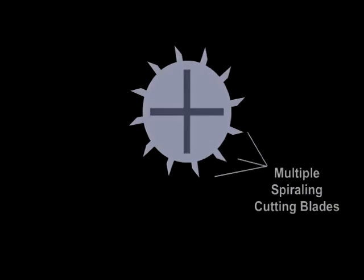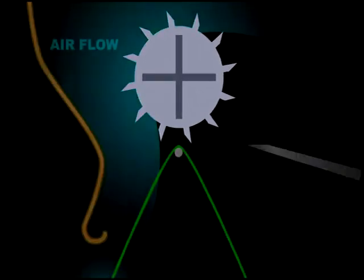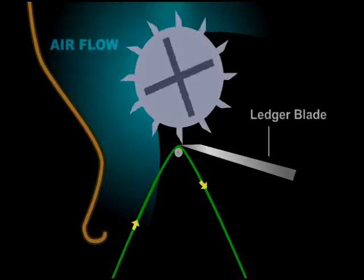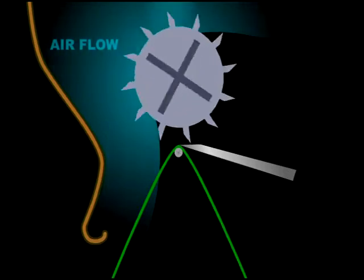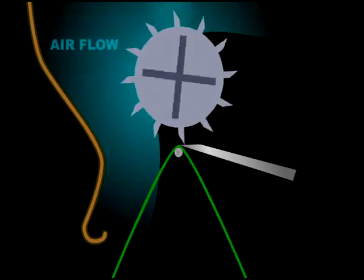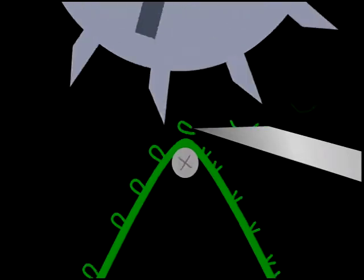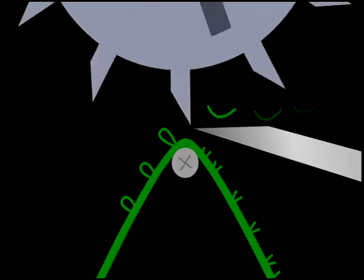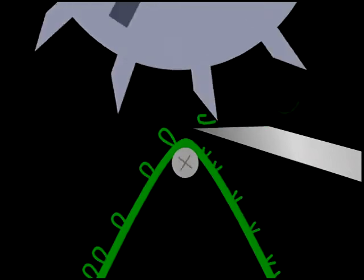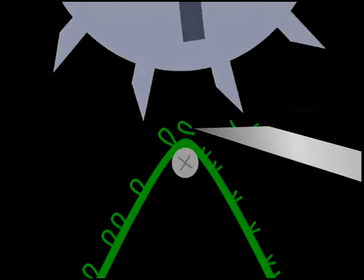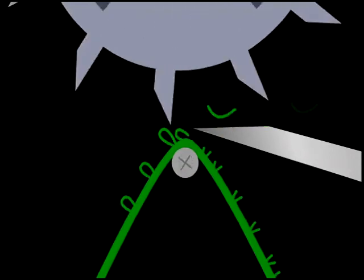...is precisely presented to the cutting point of a rotating cylinder and a rigid shearing blade. On the cylinder, multiple spiraling cutting blades create a scissors cutting action as they cross the rigid and straight shearing blade. As a result, the tips of the fiber or yarns are accurately cut across the width of the fabric.